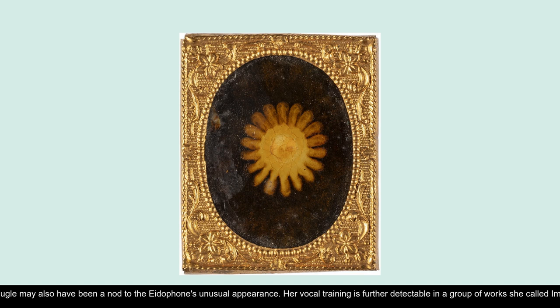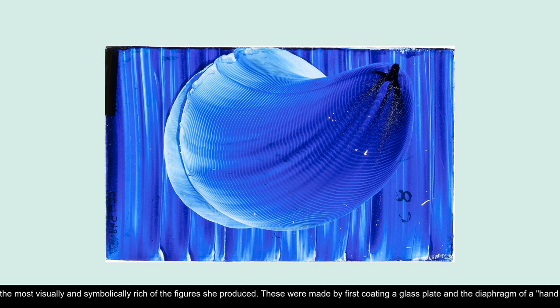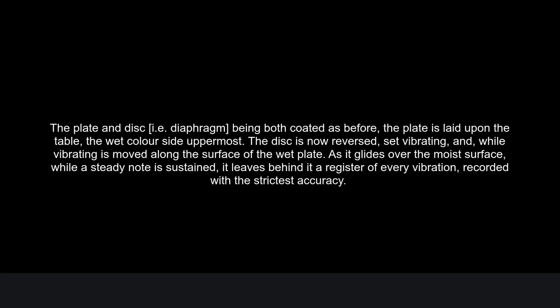Impression figures are by far the most visually and symbolically rich of the figures she produced. These were made by first coating a glass plate and the diaphragm of a hand eidophone with pigment, then passing the diaphragm of the eidophone over the plate surface while singing a note into its mouthpiece. 'The plate and disc, being both coated as before, the plate is laid upon the table, the wet color side uppermost. The disc is now reversed, set vibrating, and while vibrating is moved along the surface of the wet plate. As it glides over the moist surface, while a steady note is sustained, it leaves behind it a register of every vibration, recorded with the strictest accuracy.'